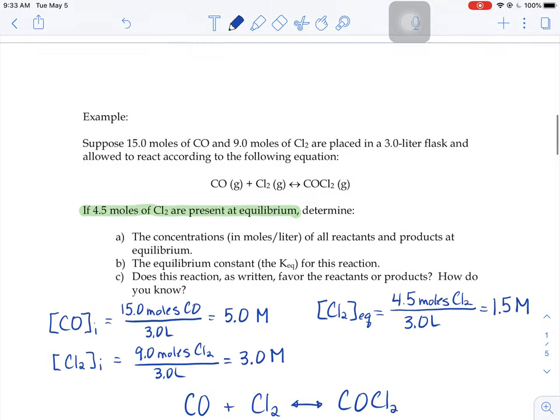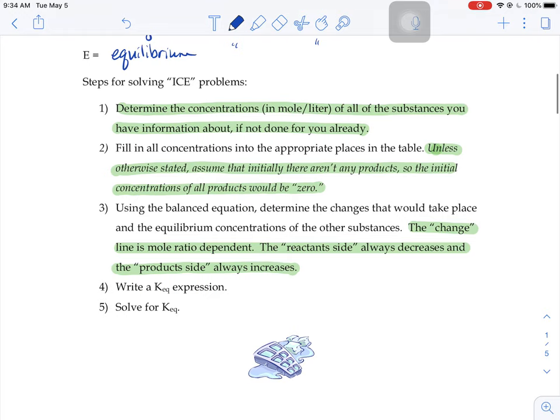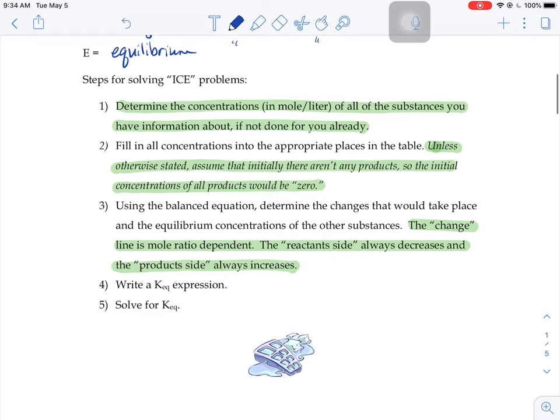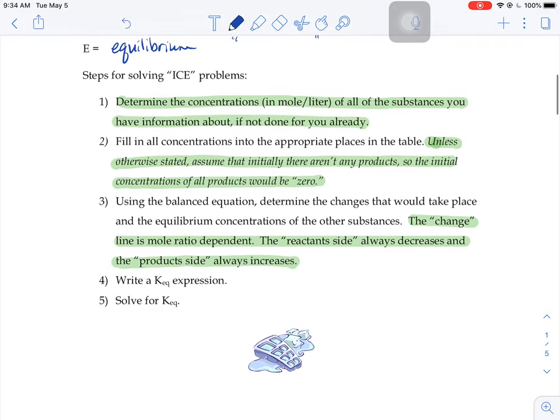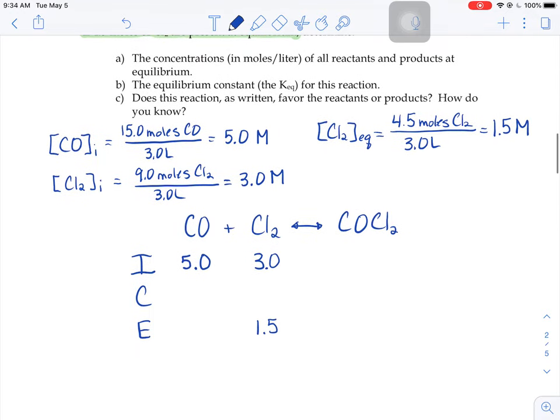It also told us up above here in step number two, unless otherwise stated, you can assume initially there aren't any products. So the initial concentrations of all products would be zero. So my initial COCl2 is going to be zero.